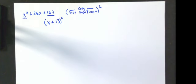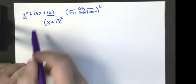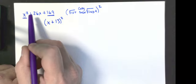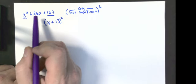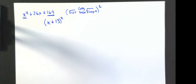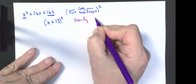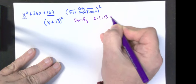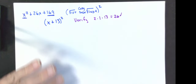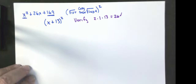This is why I had you memorize some perfect squares. One important thing: you want to verify that the middle term equals two times the first times the last, because sometimes the first and last terms can be perfect squares but the middle doesn't fit. Here, 2 times 1 times 13 equals 26 — that works. So the answer is (x + 13)².